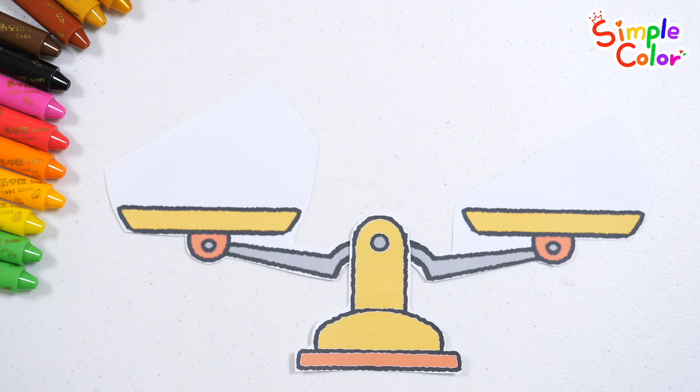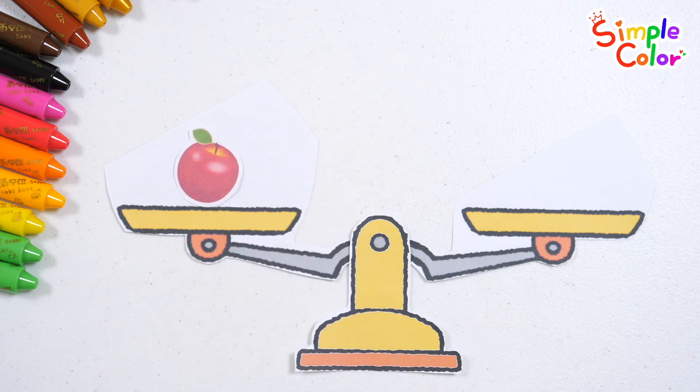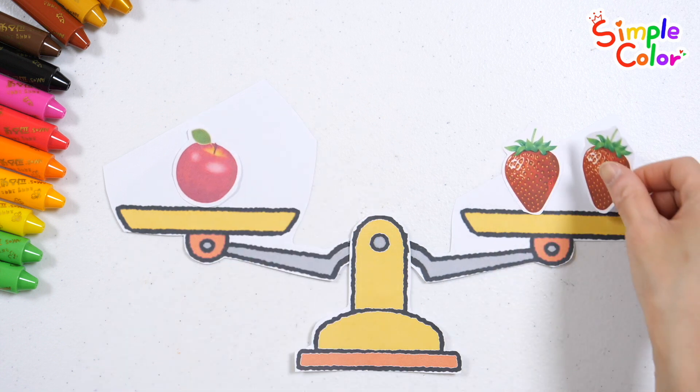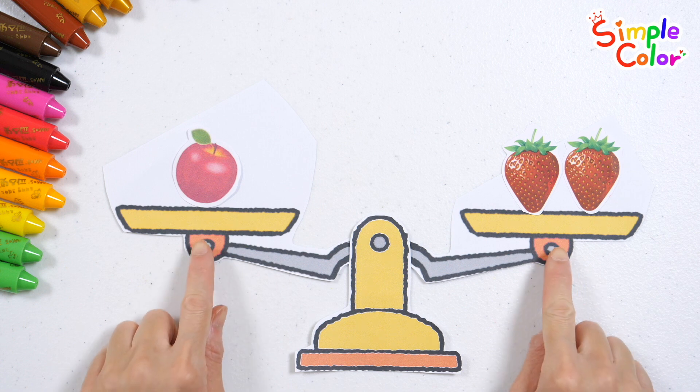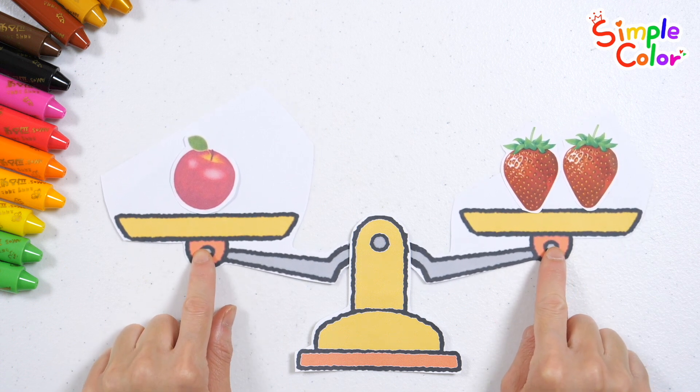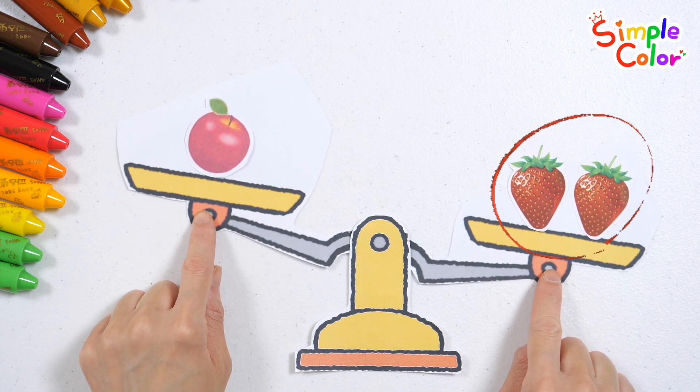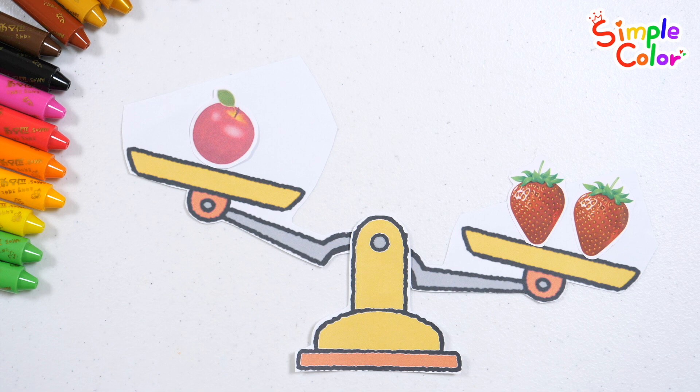It's a scale! Let's compare which one is more. 1 apple. 2 strawberries. That's right! 2 is a number greater than 1.